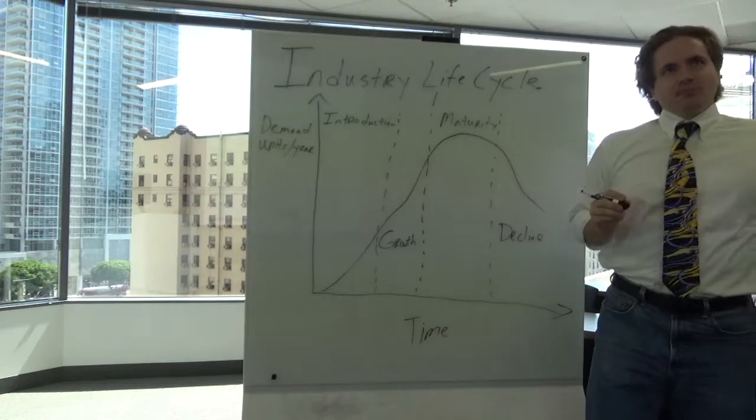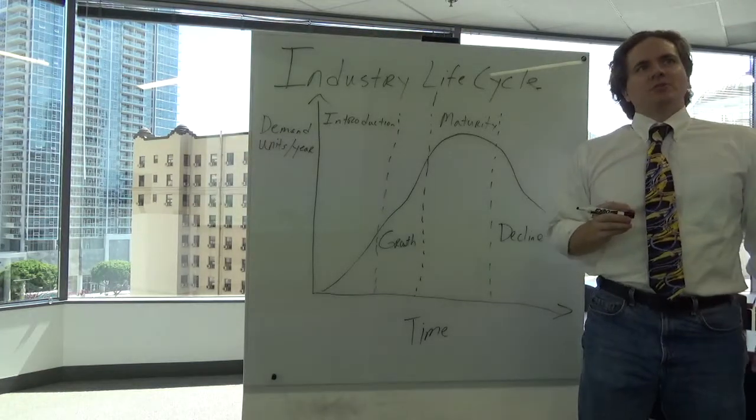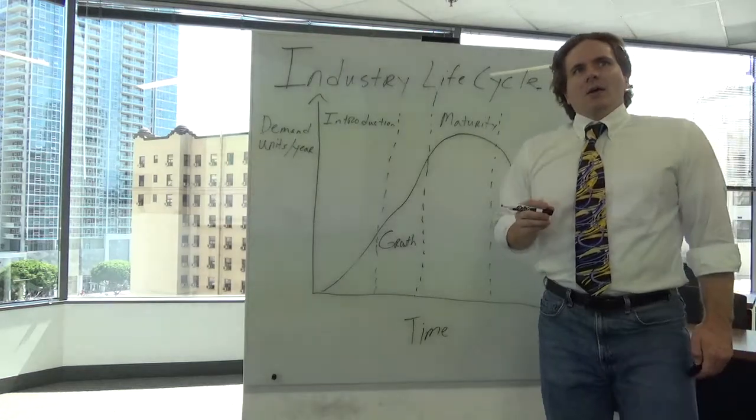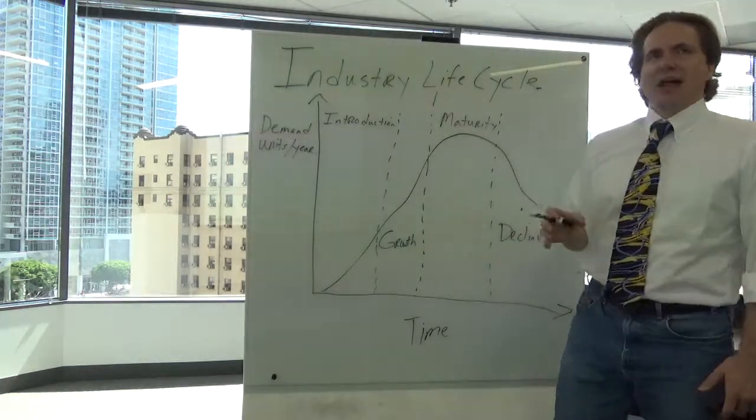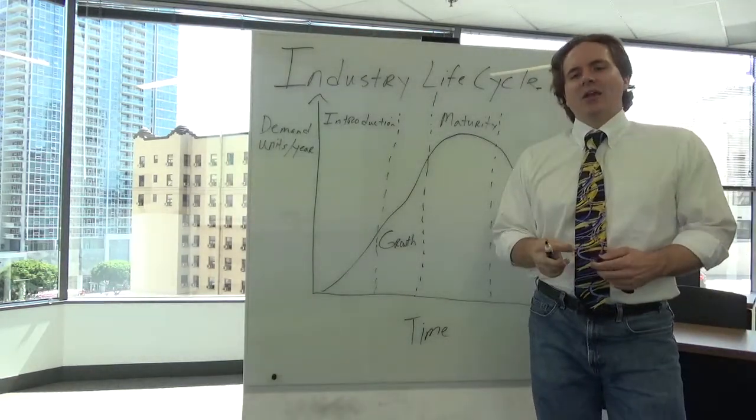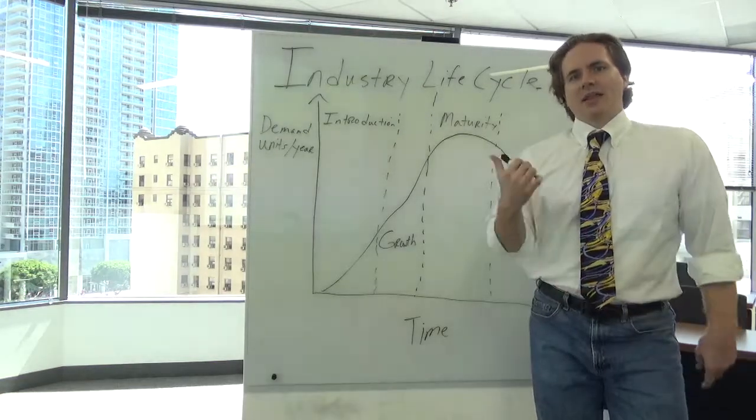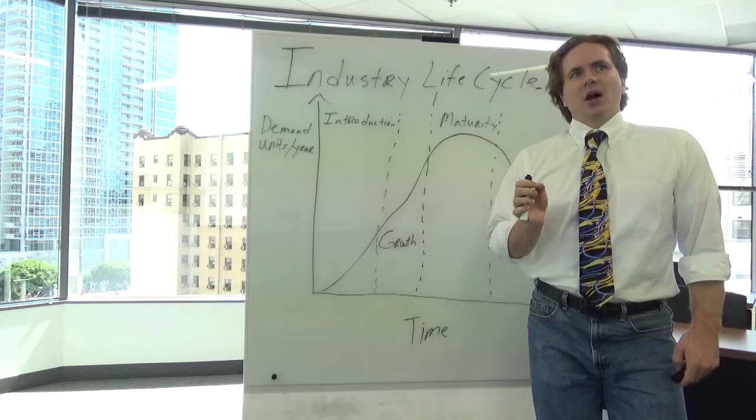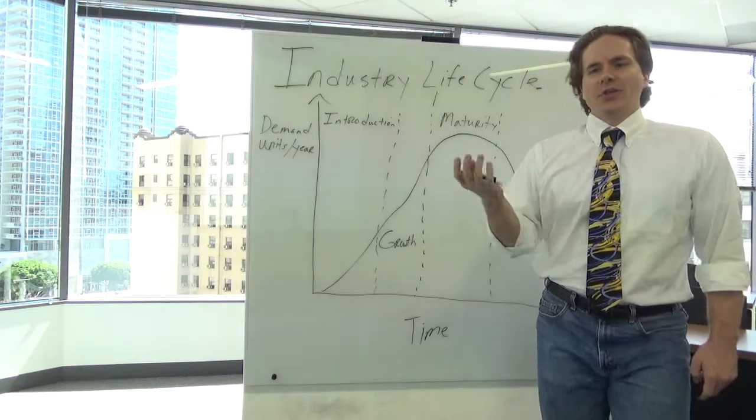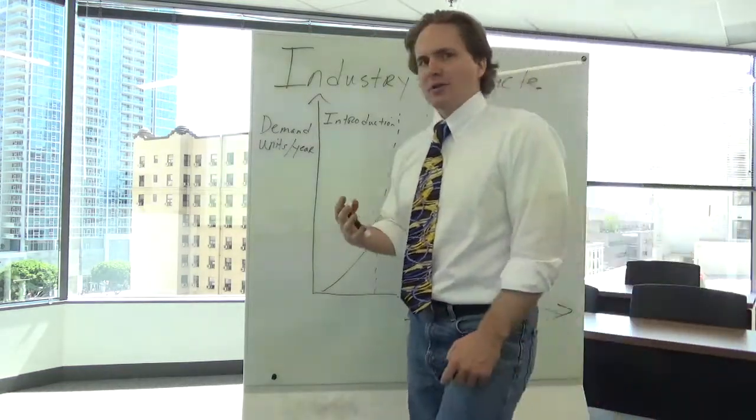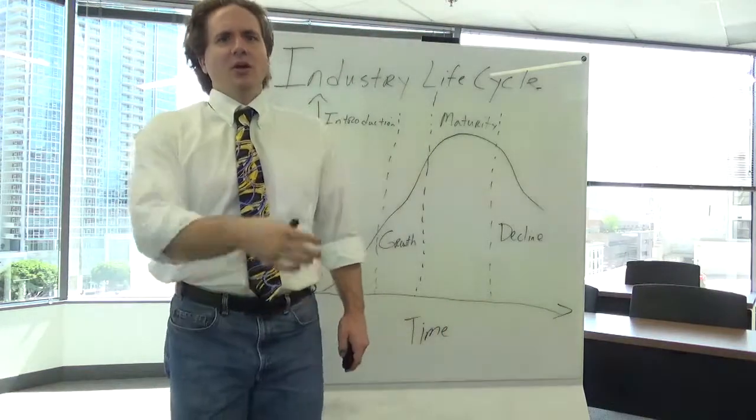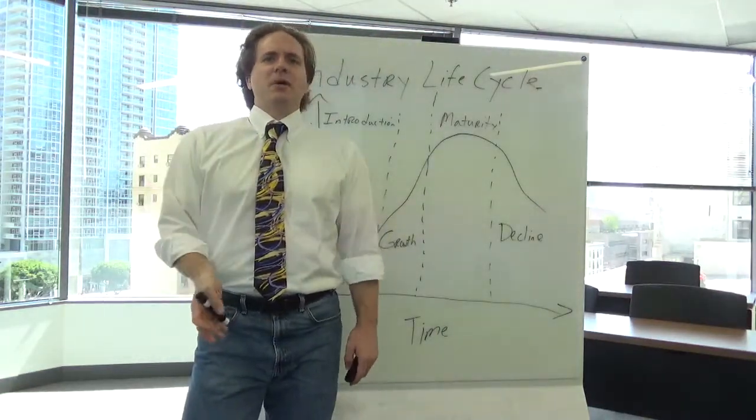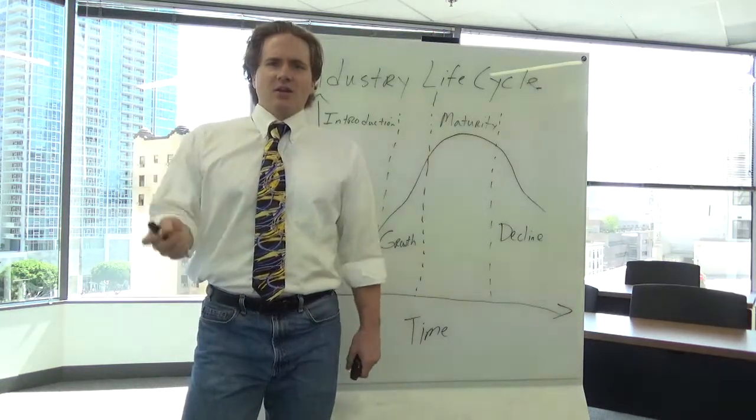So a couple of important notes to think about this. A product life cycle does not necessarily mean a firm's life cycle. We're talking about specific outputs of a particular firm. So think of a big company like Procter and Gamble, right? They have health and beauty. They have grooming. They have kids' cosmetics, adult cosmetics, dental hygiene, all that kind of stuff.